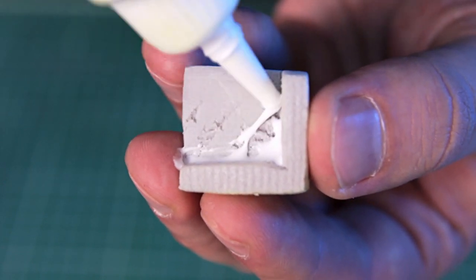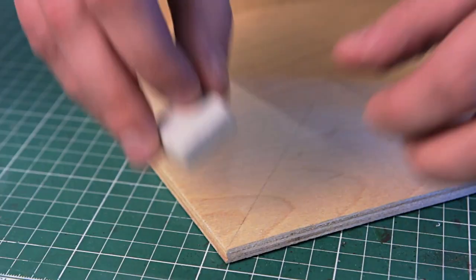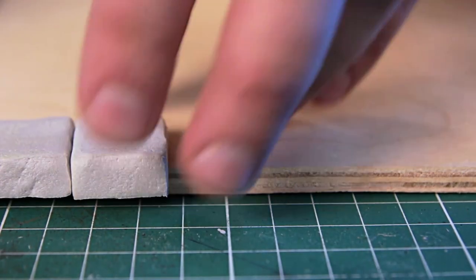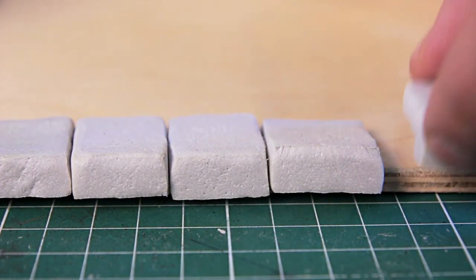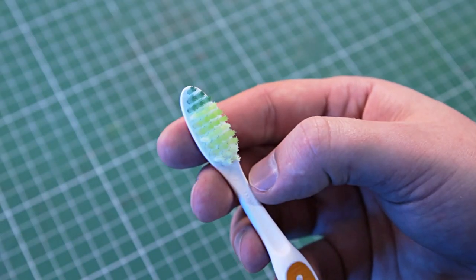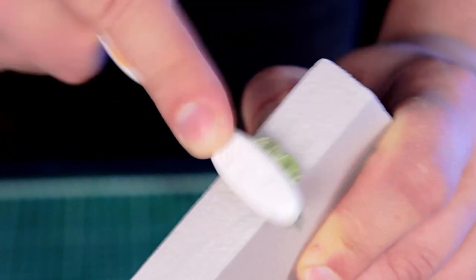PVA glue is great for gluing XPS foam and wood. By the way, I didn't show you how I made the stone texture. I will need a toothbrush for this. Just bang the bristles against the foam until you get the texture you want.